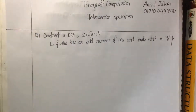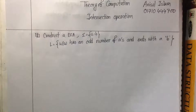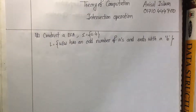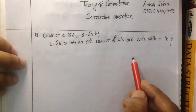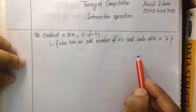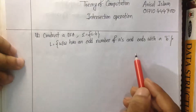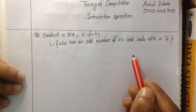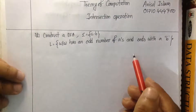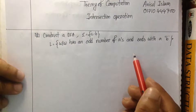In the previous video we saw that the union operation is used in formal languages. We have seen the regular operation as well as the intersection operation. The union operation and intersection operation were covered, and we saw how to implement these ideas.